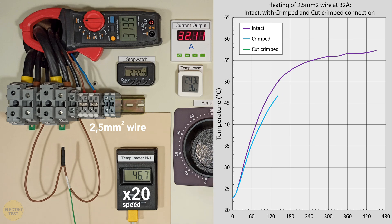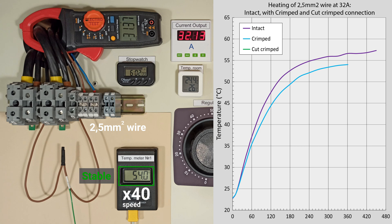With the crimp sleeve, the wire heats up even slower. But I need a connection that is closer to a solid wire.